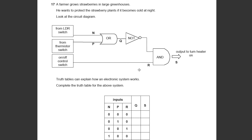This is question 17, OCR Gateway P6 Physics or P6 Further Additional Science. A farmer grows some strawberries in large greenhouses. He wants to protect the strawberry plants if it becomes cold at night. Look at the circuit diagram.